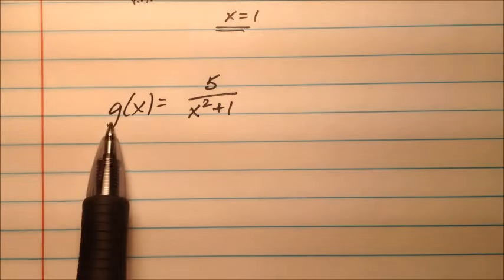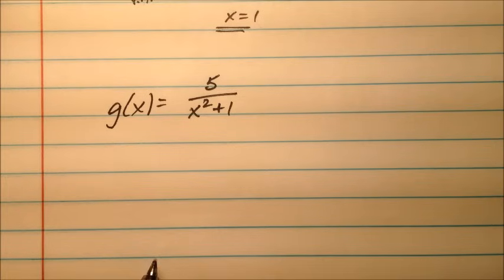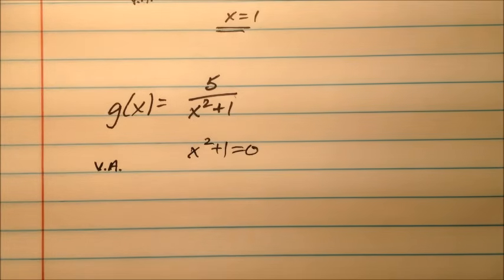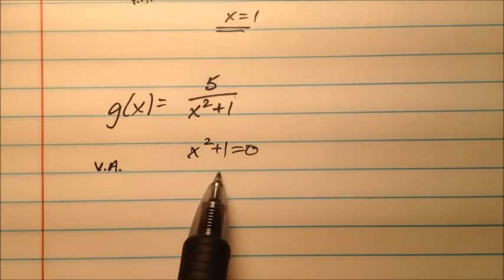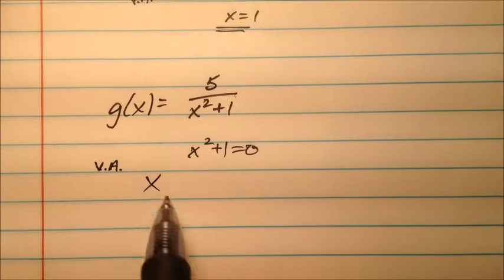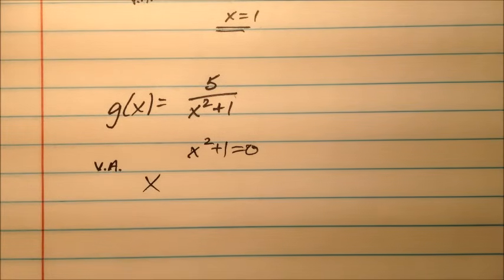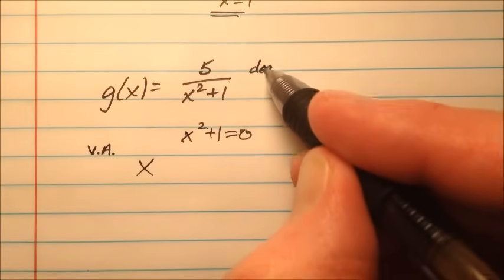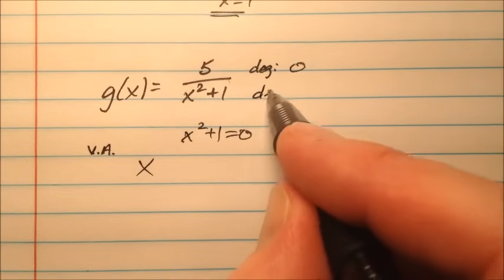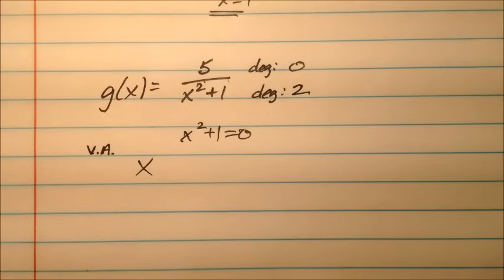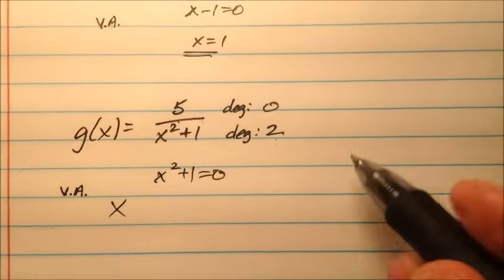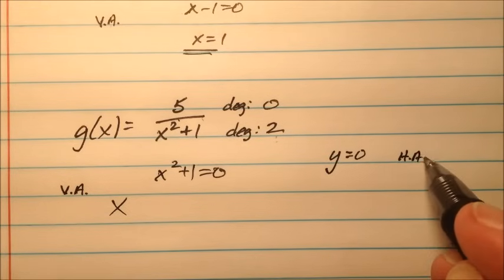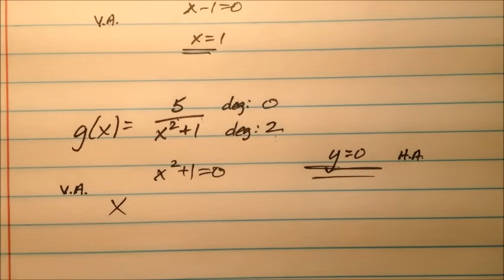In our fifth example, g of x equals 5 over x squared plus 1. Setting the denominator equal to 0: x squared plus 1 equals 0 can't be factored because it's the sum of squares — it's prime — so there are no vertical asymptotes. For the horizontal asymptote, the degree of the numerator is 0 and the degree of the denominator is 2. Since the numerator's degree is smaller, the horizontal asymptote is y equals 0. This function has one asymptote, a horizontal one at y equals 0.